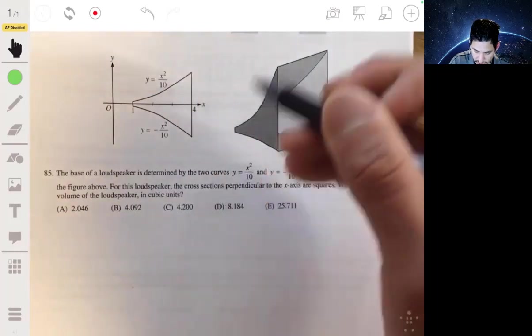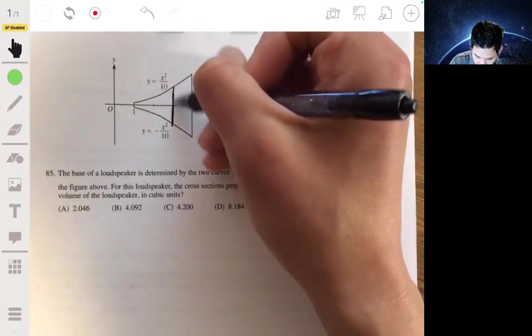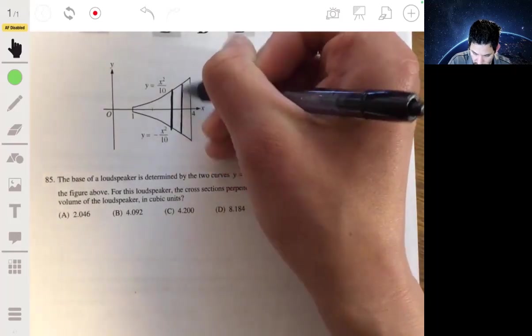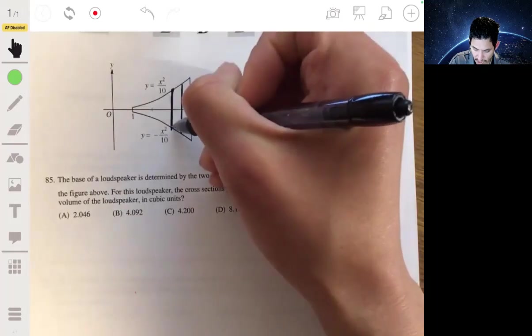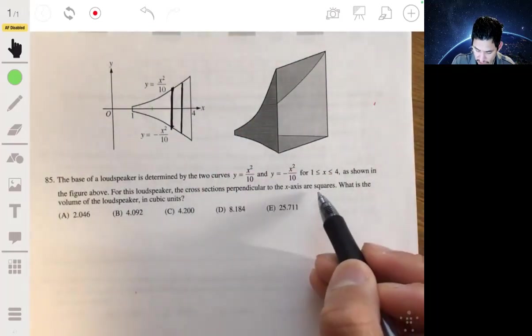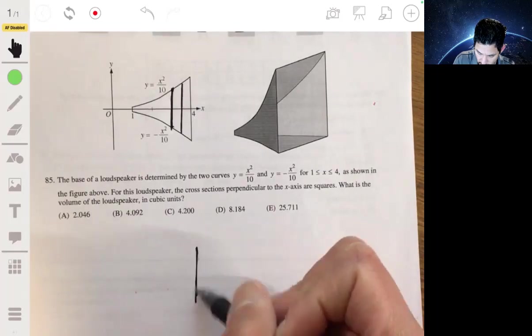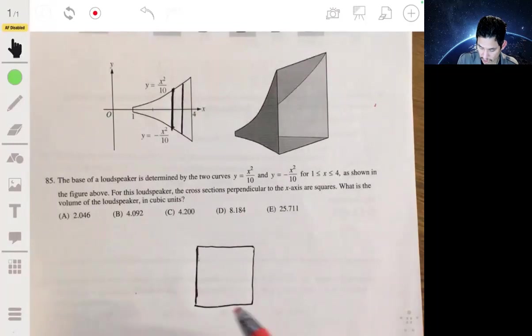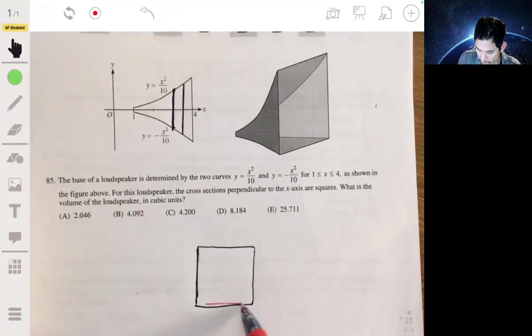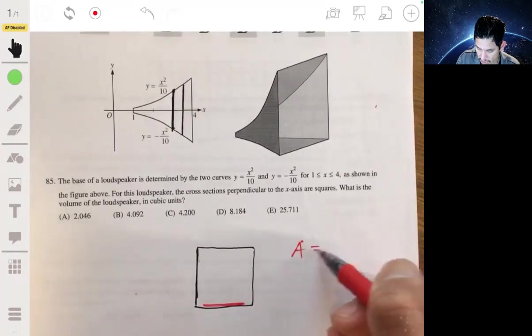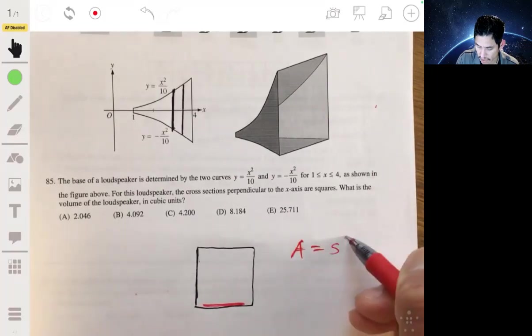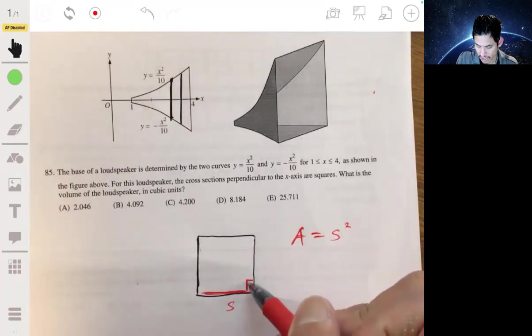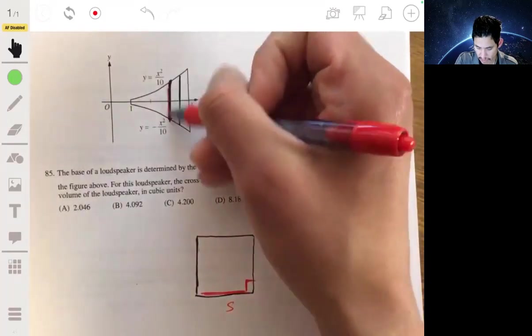The cross sections are perpendicular to the x-axis. You can think of these vertical lines as a cross section, and the cross sections are squares. The equation of a square is the side length squared, s squared.